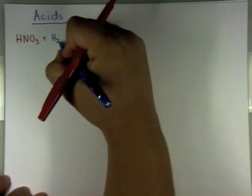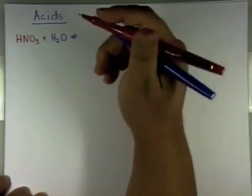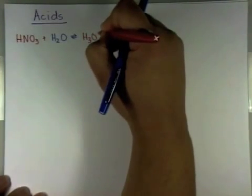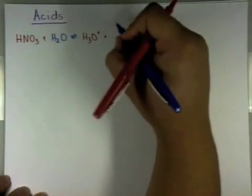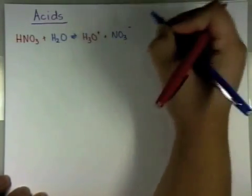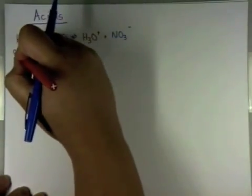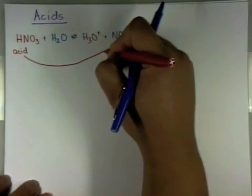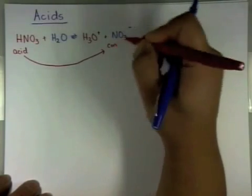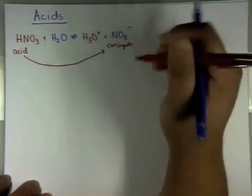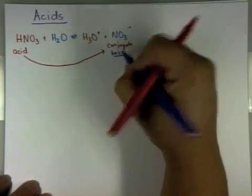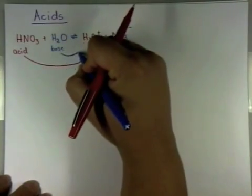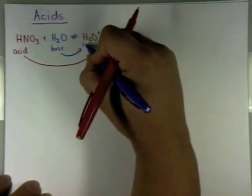HNO3 is going to be our neutral acid. It's going to react with H2O to form H3O+ and NO3-. So notice here, we have HNO3 as our acid. And the result of losing an H+ or a proton results in NO3-, which is the conjugate base of that acid. Since HNO3 is our acid, H2O has to be our base. And so it will form its conjugate acid, H3O+, by gaining.